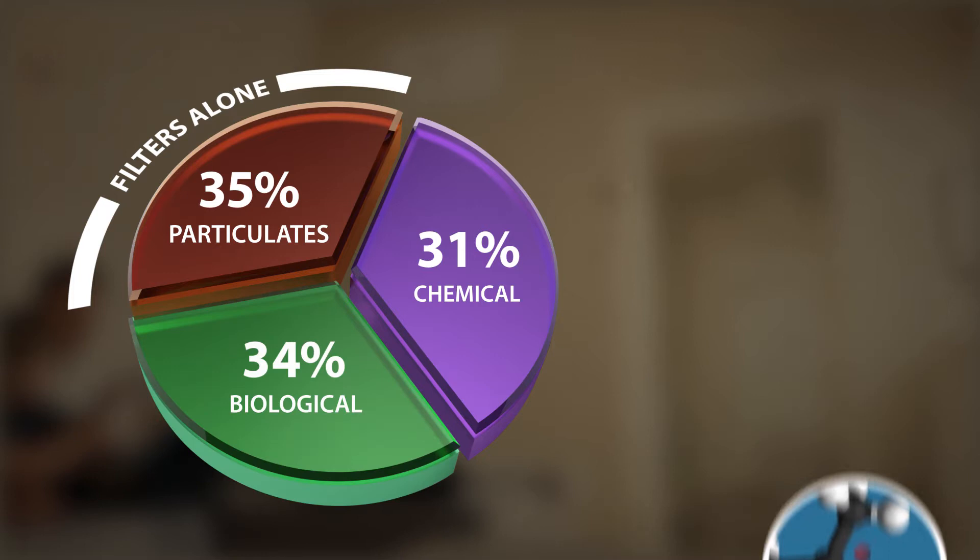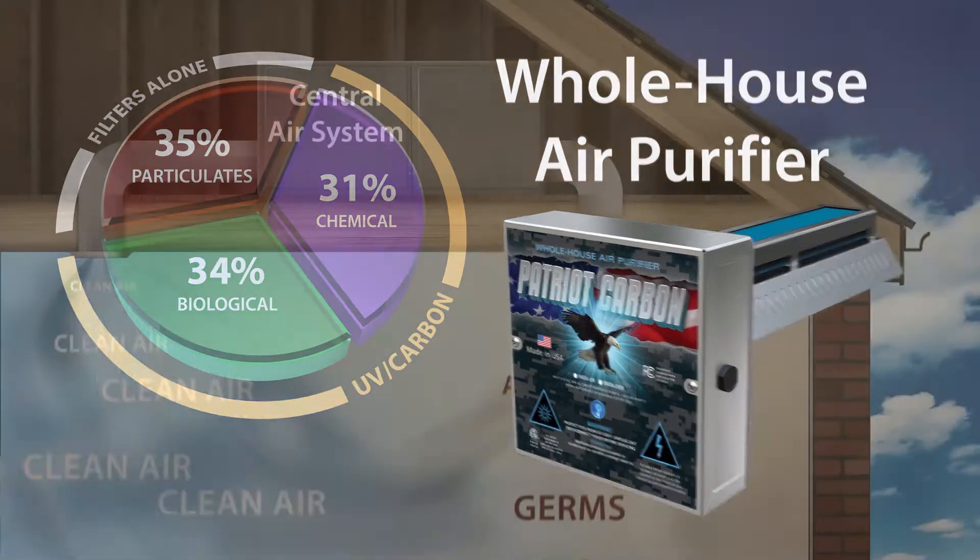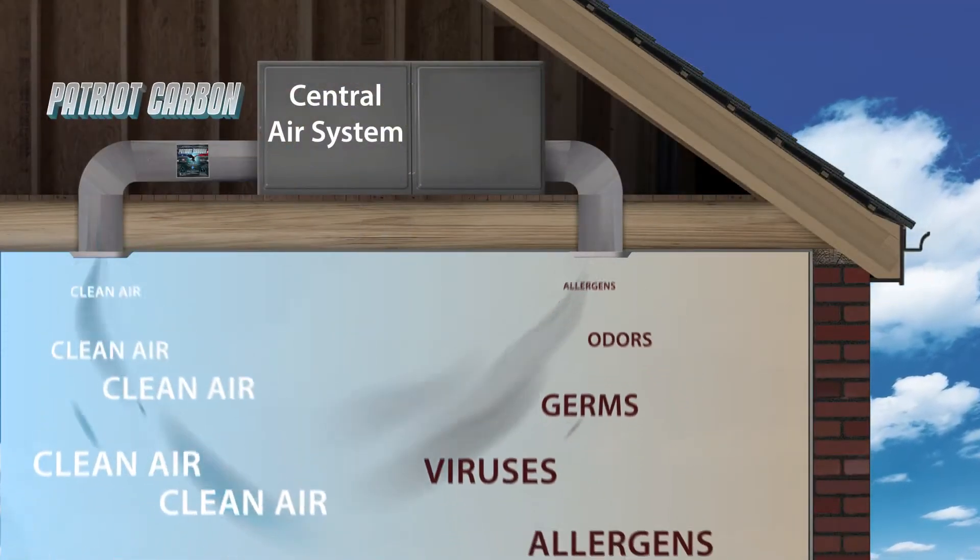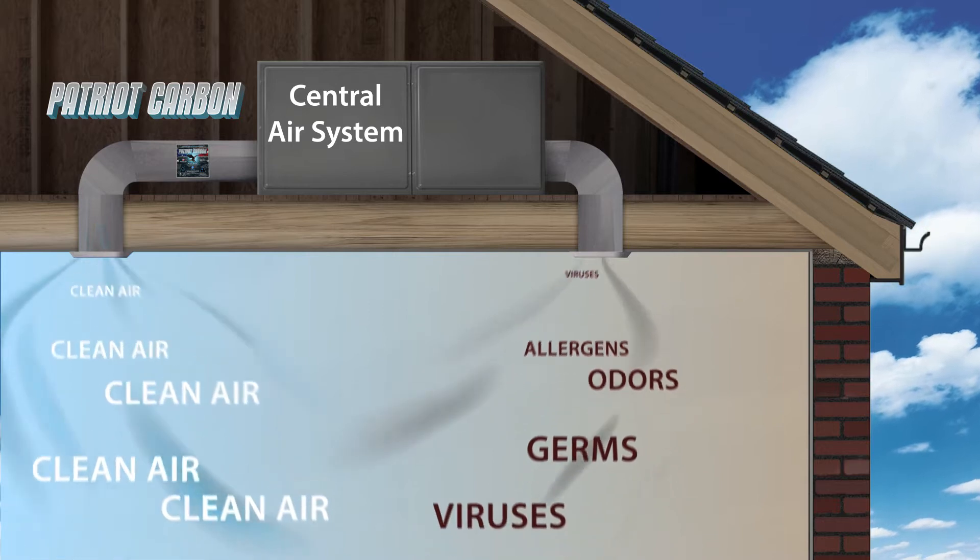For complete air treatment, you need the Whole House Carbon Catalyst Air Purifier. The Whole House Air Purifier works continuously in the central air system, where it purifies all the air in the home or office.